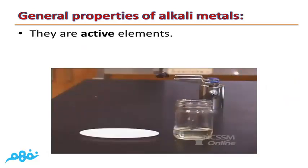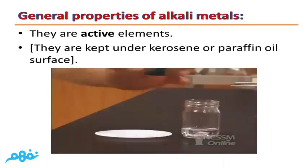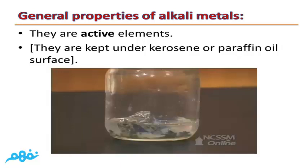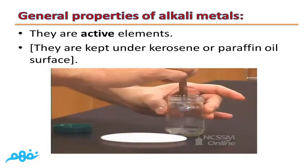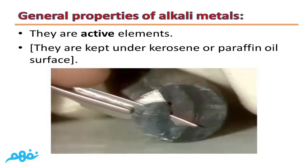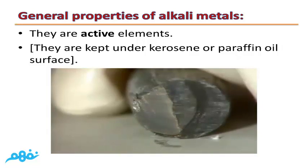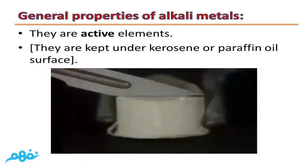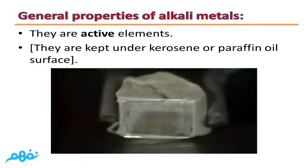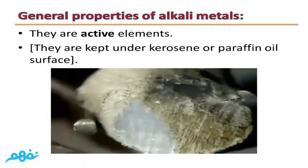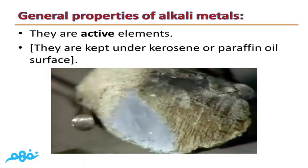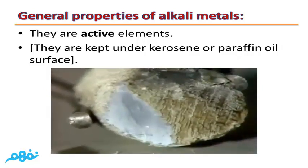The fifth property is they are active elements, so they are kept under the surface of kerosene or paraffin oil. As you can see, if we try to remove the outer layer of rust from lithium, the layer of rust will form again. This is because lithium is an active element and reacts with atmospheric oxygen. The same is done with sodium, but in a faster way. Potassium forms a layer of rust faster than sodium and lithium.